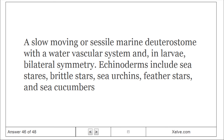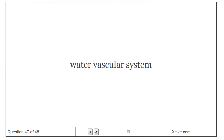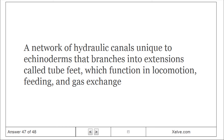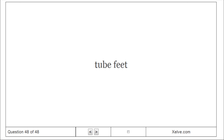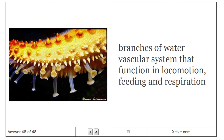Echinoderms. A slow-moving or sessile marine deuterostome with a water vascular system and, in larvae, bilateral symmetry. Echinoderms include sea stars, brittle stars, sea urchins, feather stars, and sea cucumbers. Water vascular system. A network of hydraulic canals unique to echinoderms that branches into extensions called tube feet, which function in locomotion, feeding, and gas exchange. Tube feet. Branches of the water vascular system that function in locomotion, feeding, and respiration.